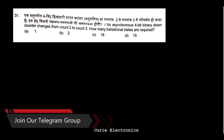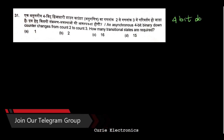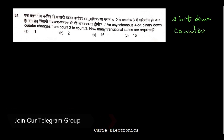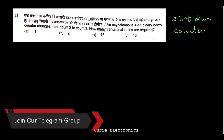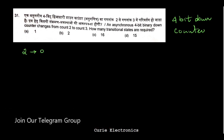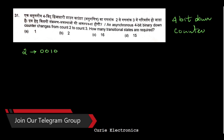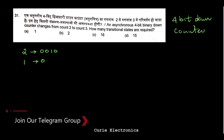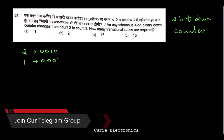It's a four-bit down counter. Count two in binary is 0010. Since it's a down counter, after two it comes to one (0001), then to zero (0000).